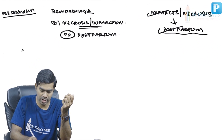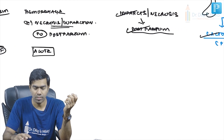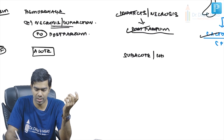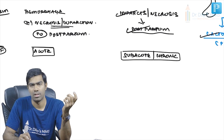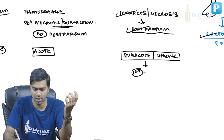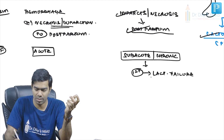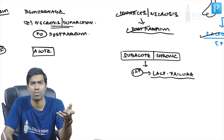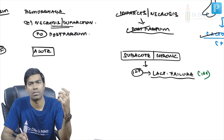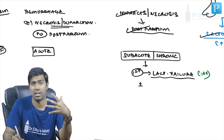Presentation-wise, apoplexy is very acute while Sheehan syndrome is subacute to chronic — not dramatic. The first clinical sign of Sheehan syndrome is lactation failure, because lactotrophs are the first to be affected as they need more blood supply and are the most prone to necrosis in the postpartum period due to hypotension.